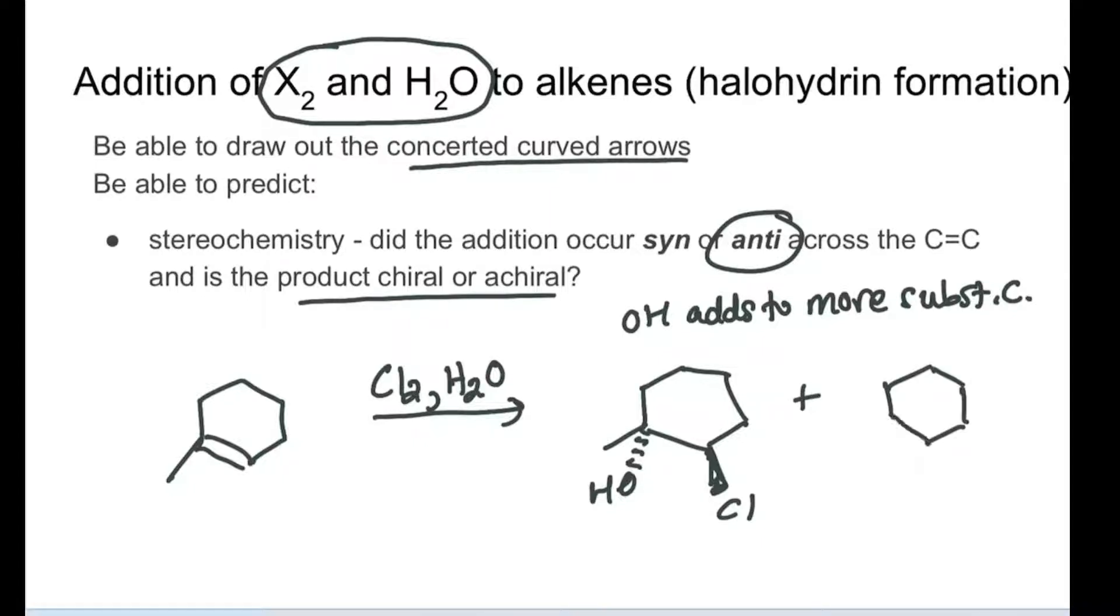With equal likelihood we have the opposite situation. The regiochemistry is that OH adds to the more substituted carbon, chlorine to the less substituted carbon, and the stereochemistry is what we've seen before - expect mixtures and achiral products unless you have a chiral starting material that has an R group influencing which side the chlorine and OH can add to.